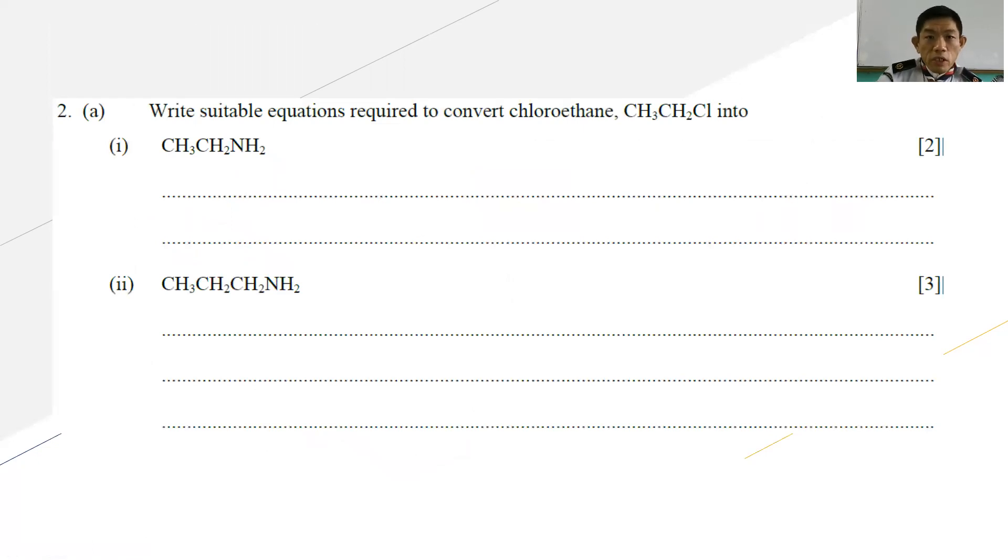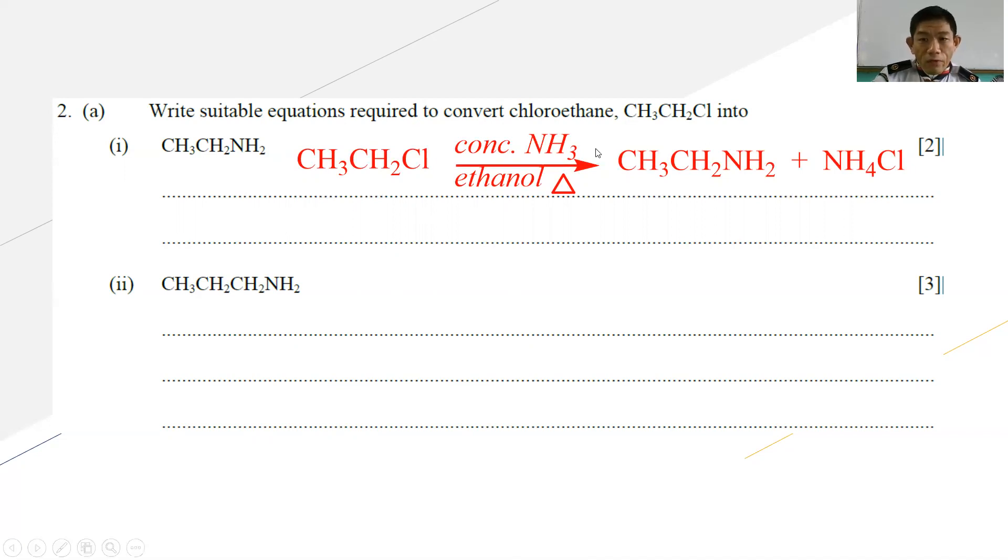For question number two, write suitable equations required to convert chloroethane into the following. You can see that the difference between number one and number two is in the number of carbons. Our starting material only has two carbons. In number one, we also have two carbons for the amine. Whereas number two, we have three carbons for the amine. So number one is a very straightforward reaction where to synthesize ethanamine, you react with ethanolic concentrated ammonia under reflux to form CH3CH2NH2 plus NH4Cl.